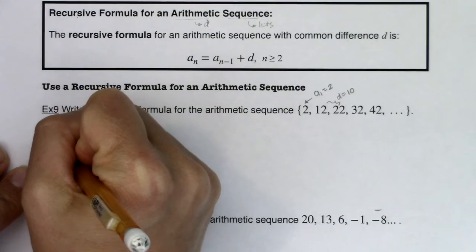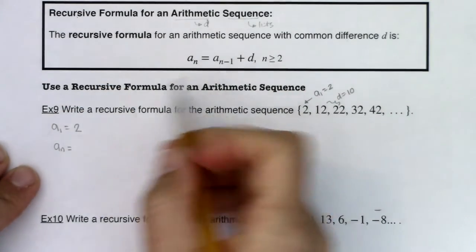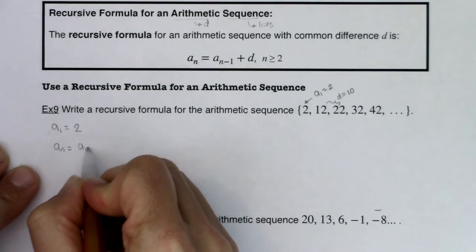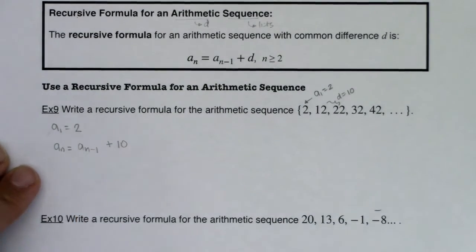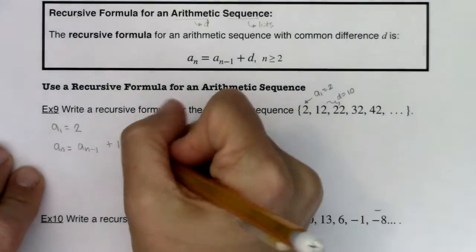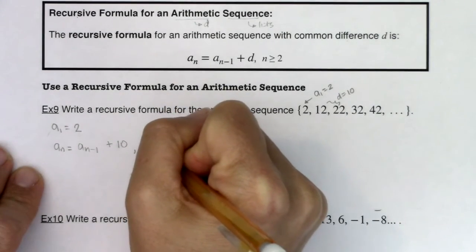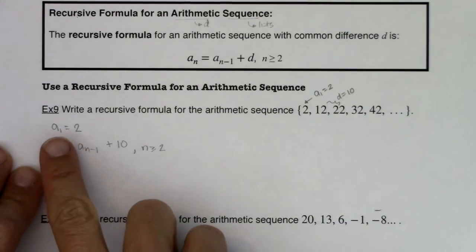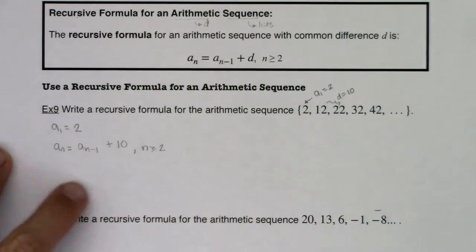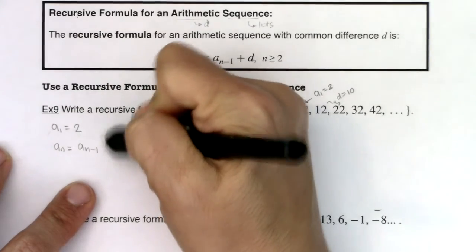Alright, now for a sub n, if I follow this out, this should be a sub n minus 1 plus d, which is 10. And quite literally, that's it. There's nothing more to it than this. It seems maybe like there should be more, but that's it. I want my starting term and then I want every term after that.